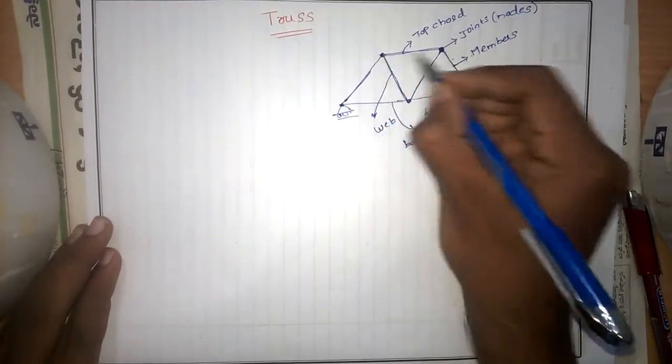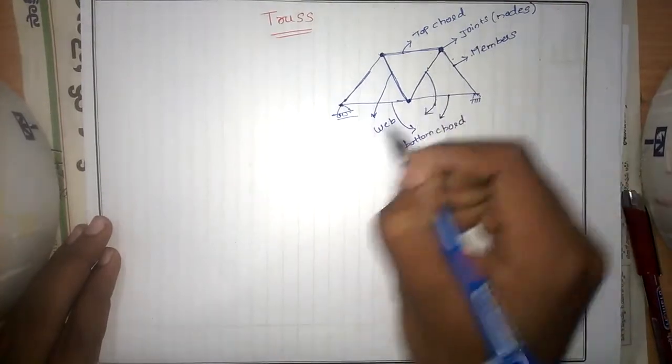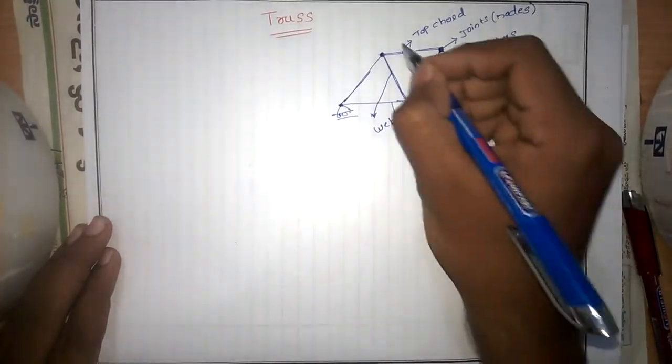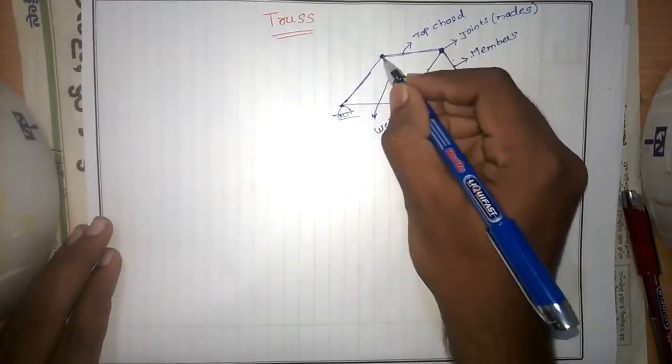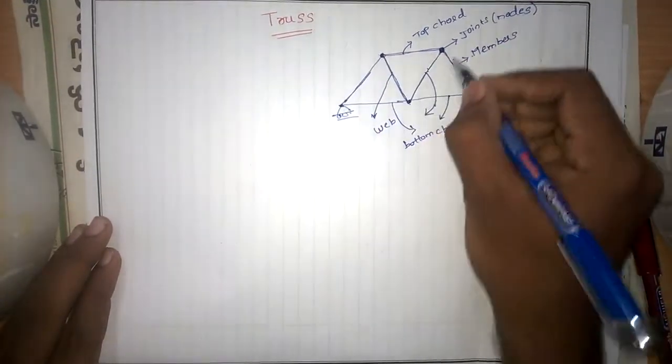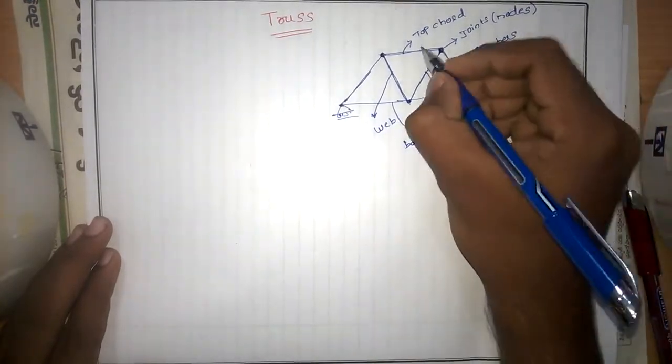The connection points are said to be joints, and these joints are frictionless joints.